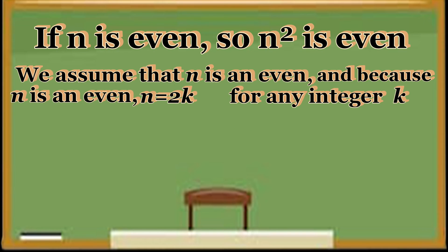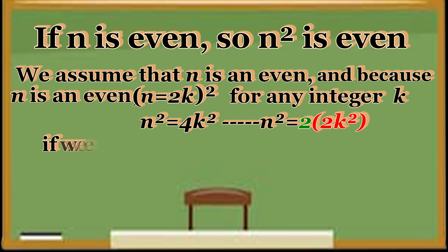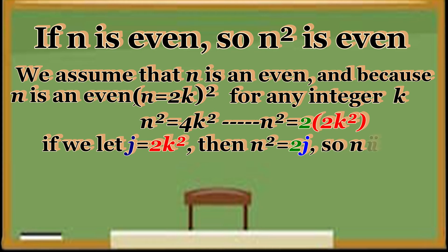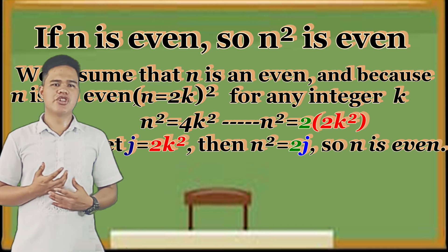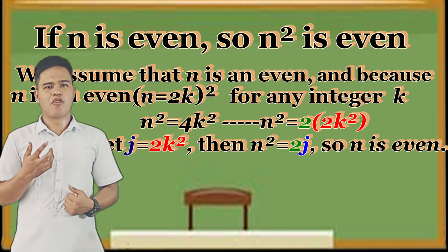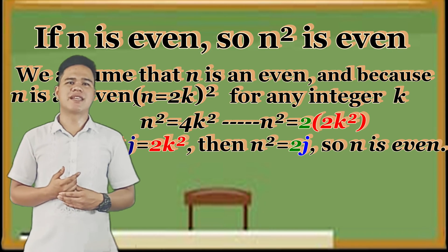Now, if we are going to square this, then N squared equals 2 times 2K squared, which is 4K squared. And if we let J equal 2K squared, then N squared equals 2J. So N squared is even because any integer substituted for J will result in an even number.